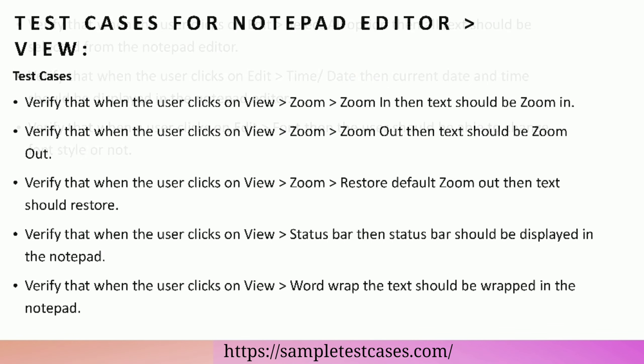Test cases for notepad editor view. Verify that when the user clicks on View Zoom Zoom In, then text should be zoomed in. Verify that when the user clicks on View Zoom Zoom Out, then text should be zoomed out. Verify that when the user clicks on View Zoom Restore Default, then text should be restored. Verify that when the user clicks on View Status Bar, then the status bar should be displayed in the notepad. Verify that when the user clicks on View Word Wrap, the text should be wrapped in the notepad.